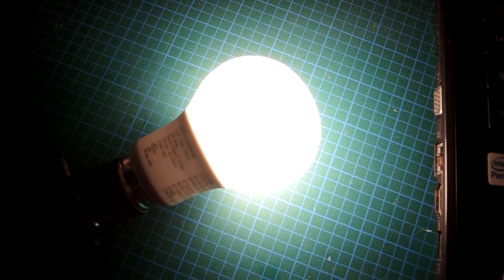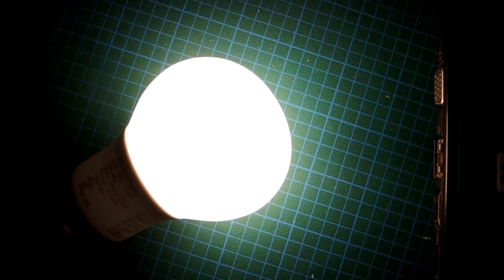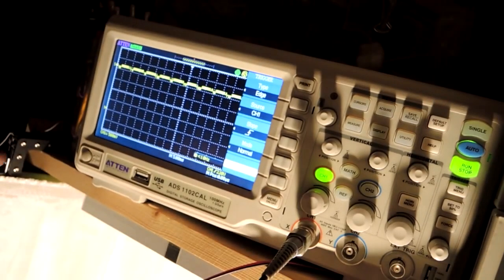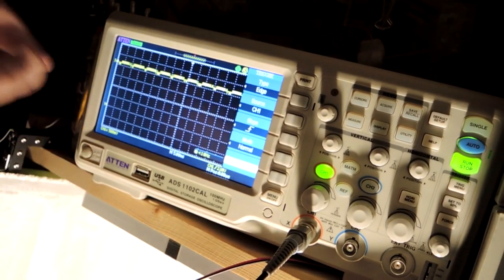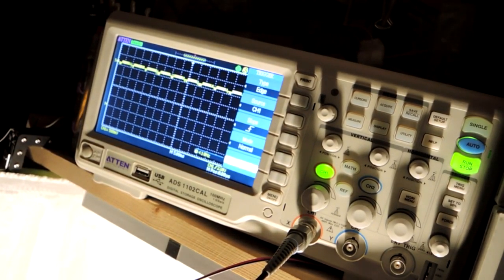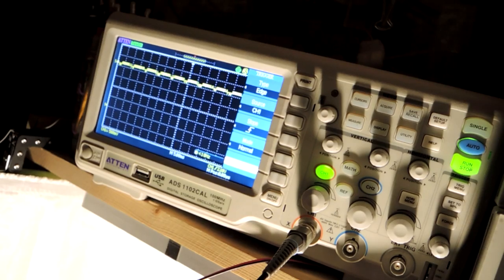In terms of flicker, there doesn't appear to be anything. I put the camera very close to the bulb, I don't see any aliasing pattern. Same thing with the oscilloscope, it's DC coupled here, a strong baseline and just a little bit of fuzz on top. So one advantage I presume of not having a dimmable architecture and a low power factor is you have no flicker, which is actually desirable.